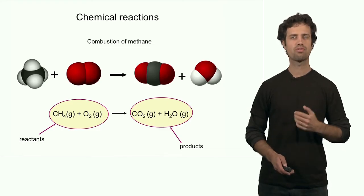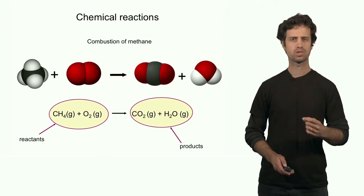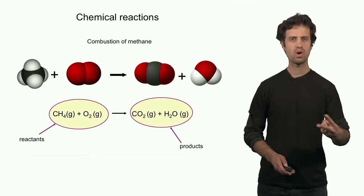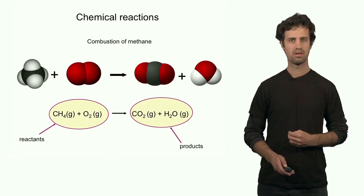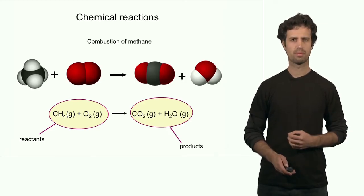on the left, I count 4. But on the right, I count only 2. Also, for oxygen, I see 2 oxygens on the left, but I see 3 on the right. So the numbers don't add up. And that's because this reaction is not balanced.